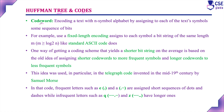A codeword means encoding a text with an n-symbol alphabet by assigning to each symbol some sequence of bits. Suppose if we want to send any message like 'data', the sender won't send it directly to the receiver. Instead, this text will be converted into some sequence of bits — for example, D is 01, A is 11, T is 10. Each text will be converted into some sequence of bits, and the sender will send that sequence to the receiver, who will decode it to read the message. This sequence of bits is nothing but a codeword.